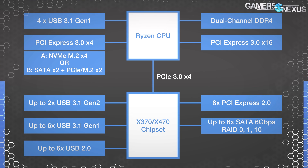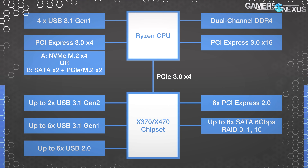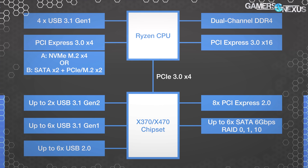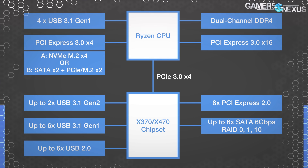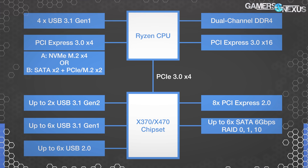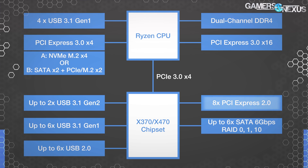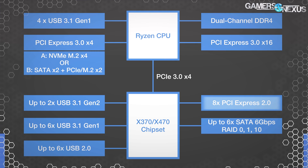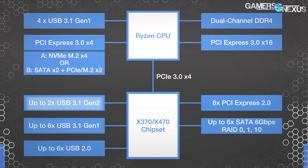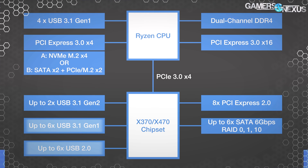Ryzen has a total of 16 lanes for PCIe 3.0 graphics devices, 4 lanes for NVMe M.2 devices, and 4 lanes that the user can never directly use because those communicate with the chipset. Desktop Ryzen supports dual-channel memory configurations, whereas Threadripper supports quad-channel. AMD allows some motherboard manufacturer flexibility, just like the Z370 chipset, by giving assignable lanes that can be switched around to other devices. The chipset can support up to 8 PCIe 2.0, 6 SATA 6Gb/s with RAID support, 2 USB 3.1 Gen 2, 6 USB 3.1 Gen 1, and 6 USB 2.0.